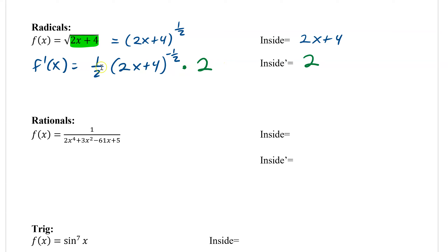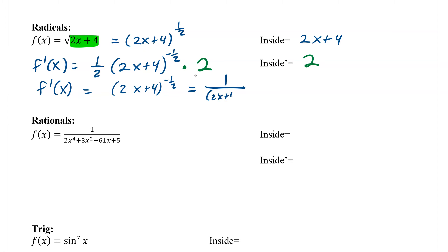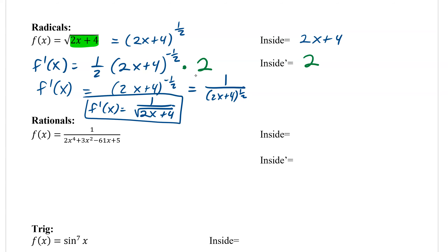You can see that the one-half and the 2 cancel, leaving us with 1. So we end up with f prime of x equals (2x plus 4) to the negative one-half. But we have to rewrite it back in its original form with no negative exponents, so this would be 1 over (2x plus 4) to the one-half. Our final f prime of x equals 1 over the square root of (2x plus 4).